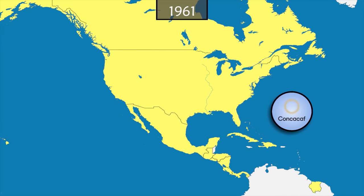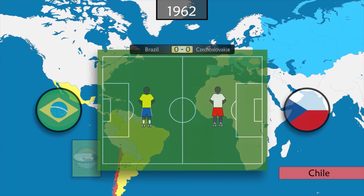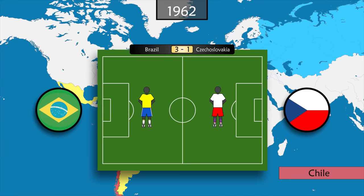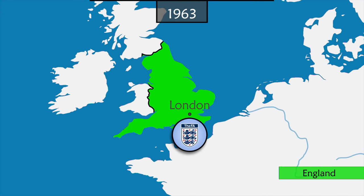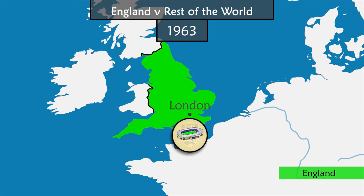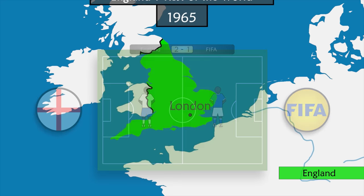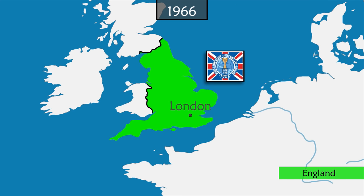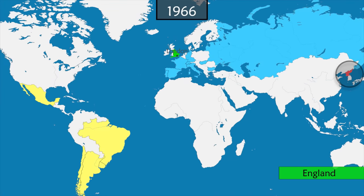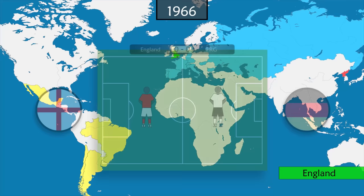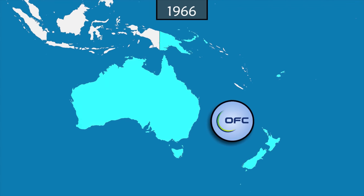In 1961, the Confederation of North, Central America and Caribbean Association Football is founded. The following year, during the World Cup in Chile, Brazil retains its title by beating Czechoslovakia three to one. In 1963, to celebrate the hundredth anniversary of the Football Association, a match is organized at Wembley Stadium between England and a FIFA world selection — England wins two to one. Three years later, England hosts the World Cup, marked by the first participation of North Korea. England wins the final against West Germany. That same year, the Oceania Football Confederation is founded.